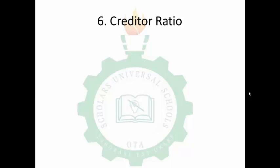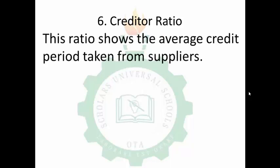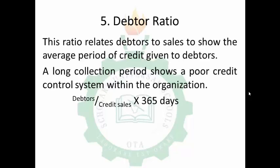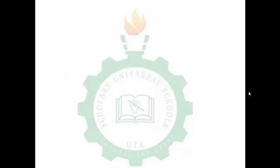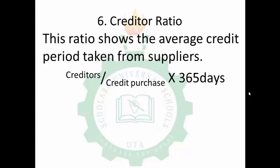The creditors ratio shows the average credit period taken from suppliers. You must have purchased on credit to have creditors. The formula is: creditors divided by credit purchases, times 365 days, and the answer is given in days. This ratio is the creditor payment period.